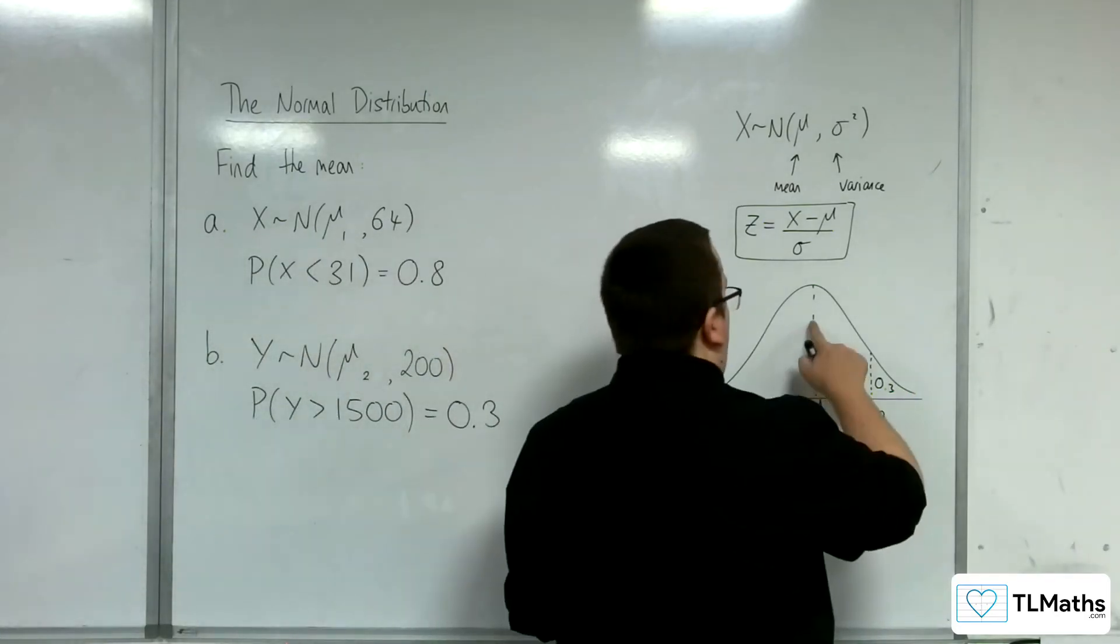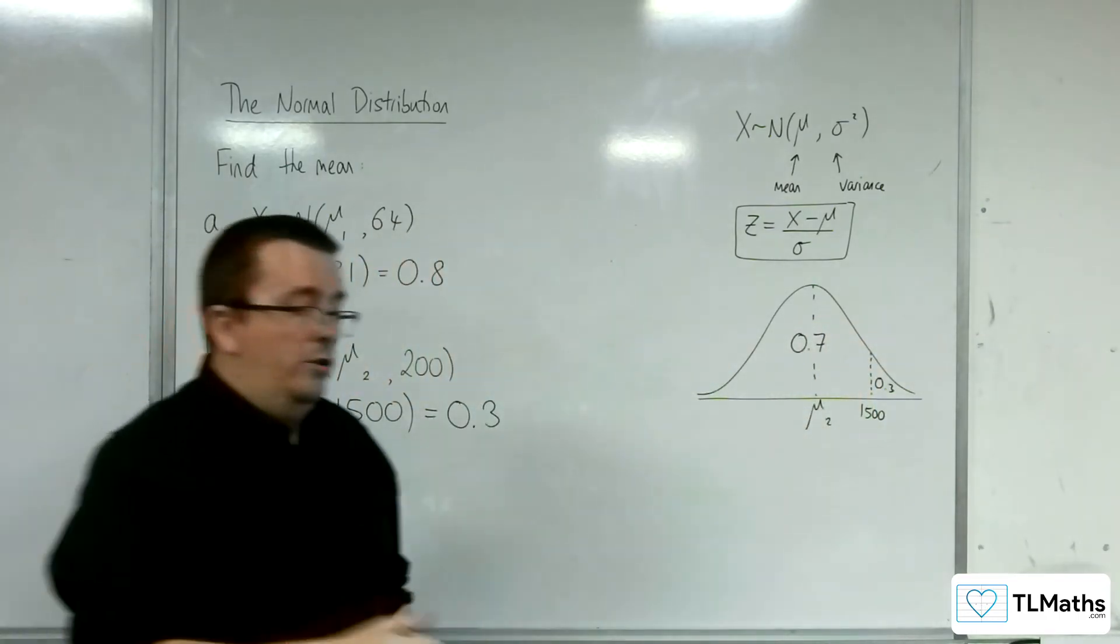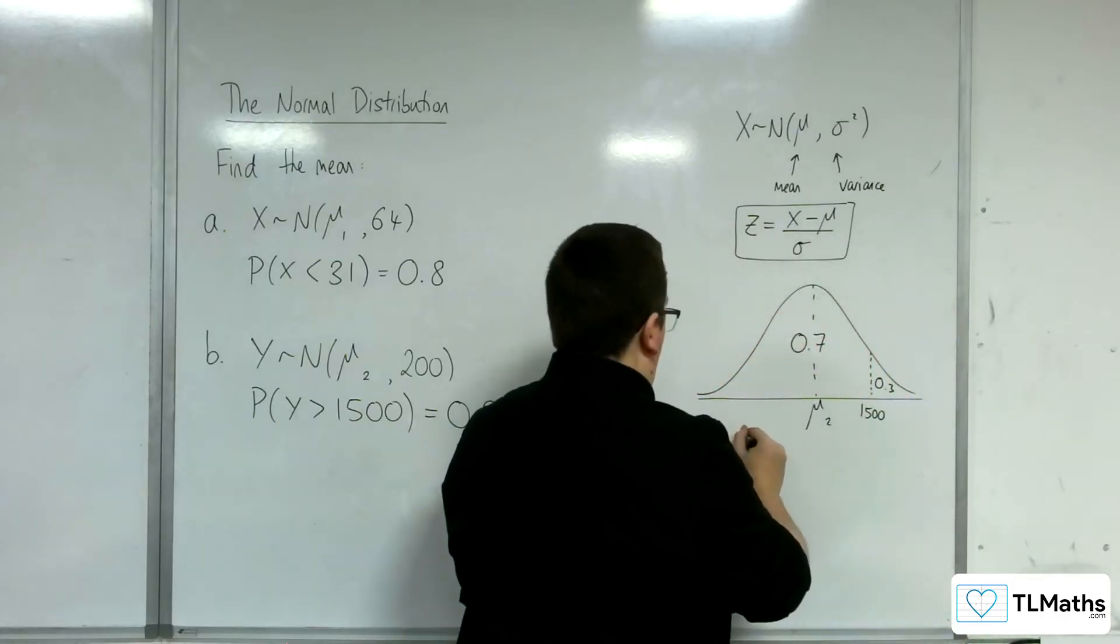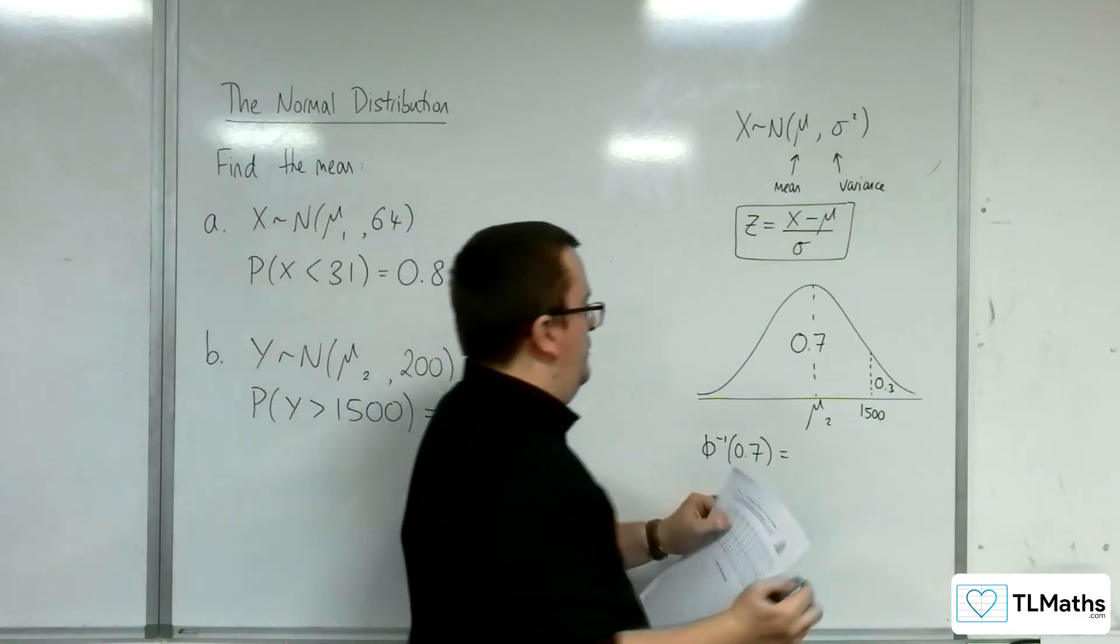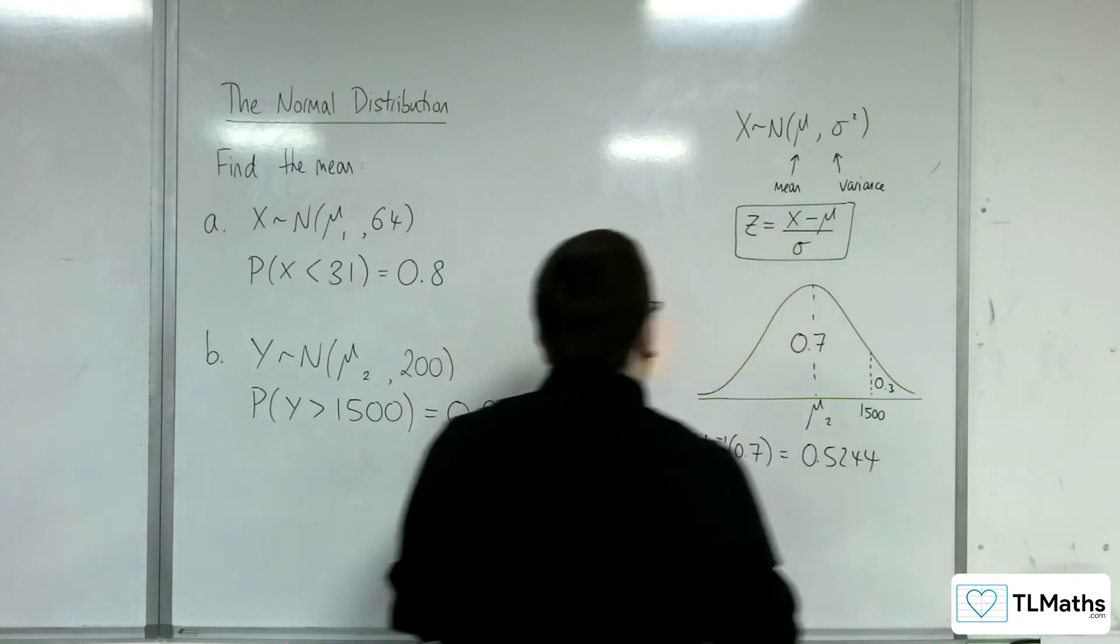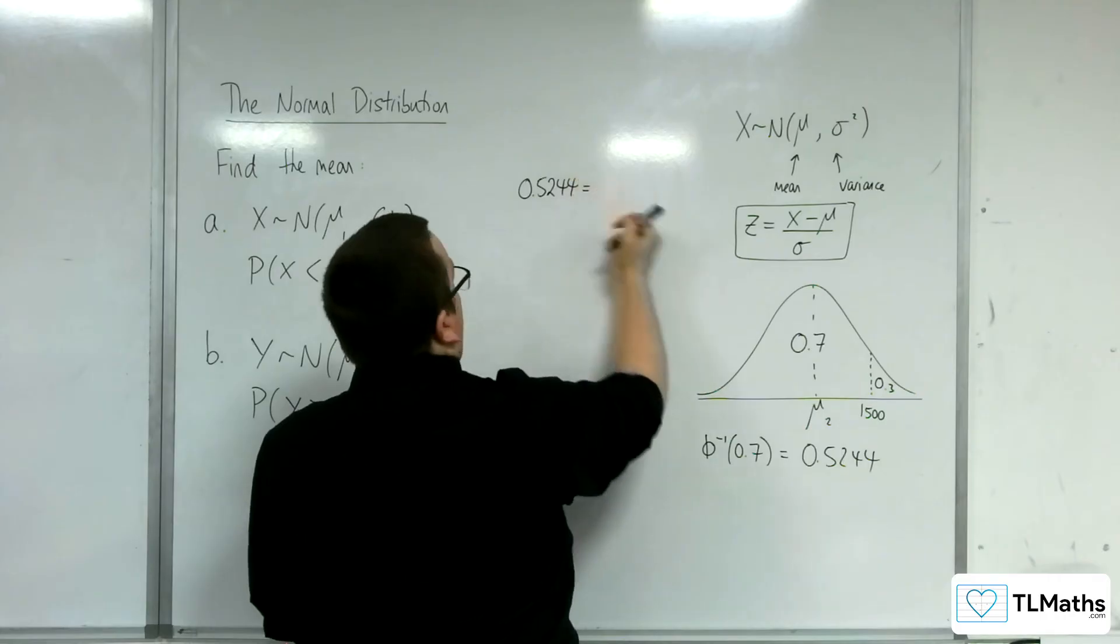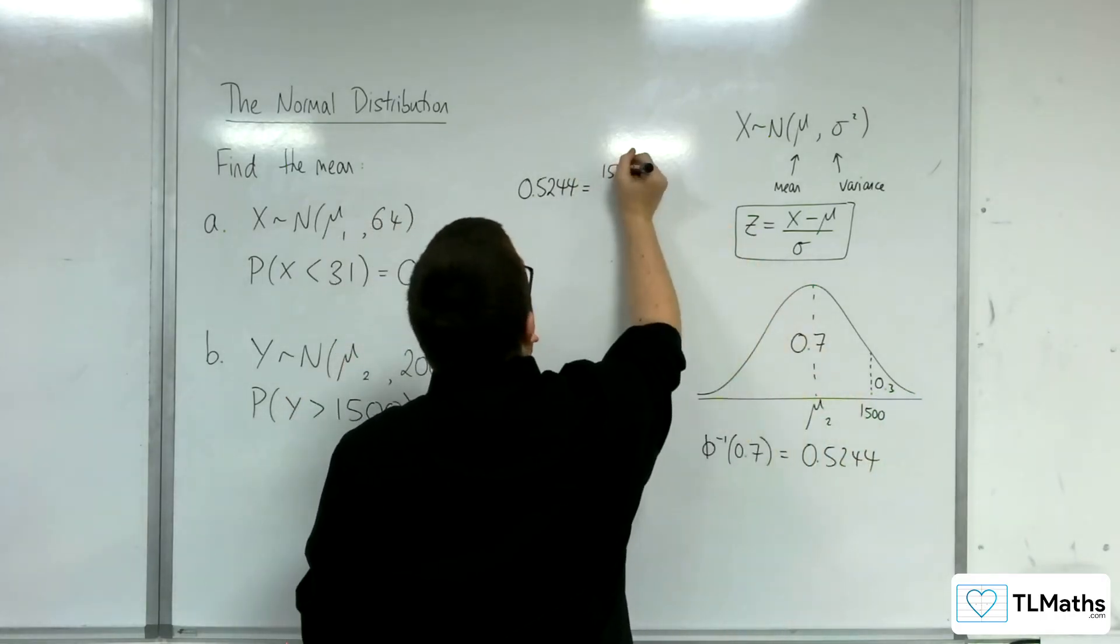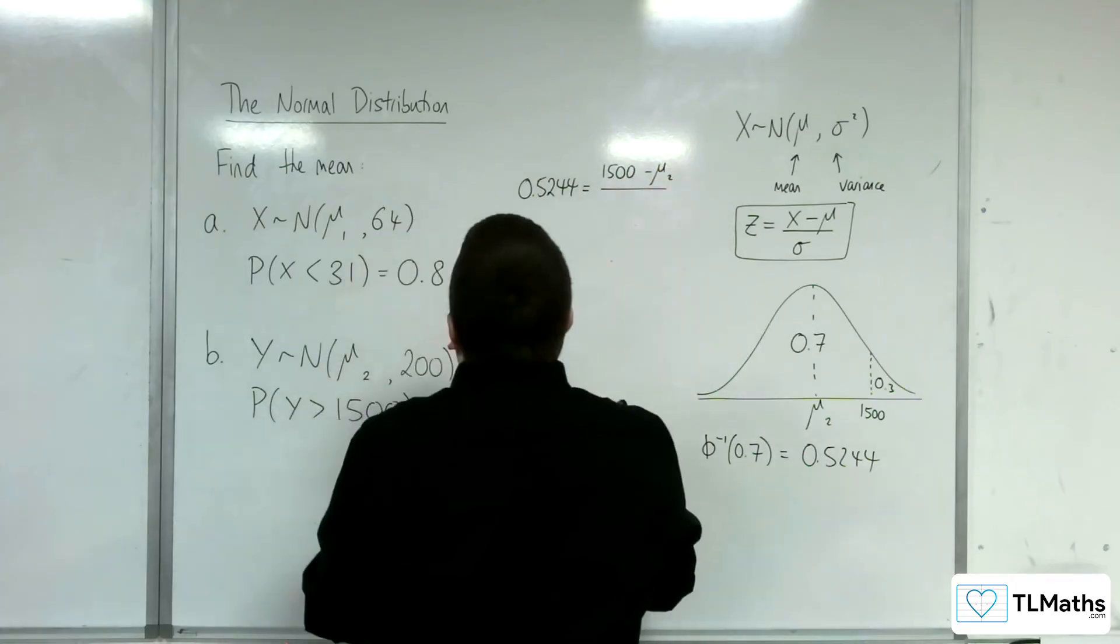So that means that this region must be 0.7. So I can look up 0.7. So the inverse norm of 0.7 from my tables, and that's 0.5244. So 0.5244 is the z value going into my formula. The x value is the 1500, take away the μ, the mean, divided by σ.